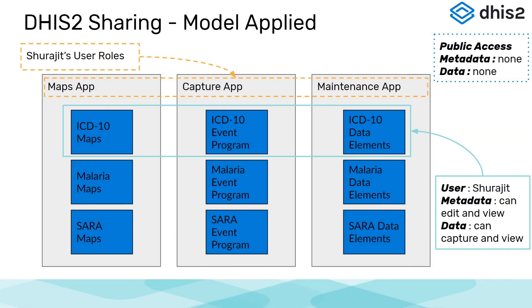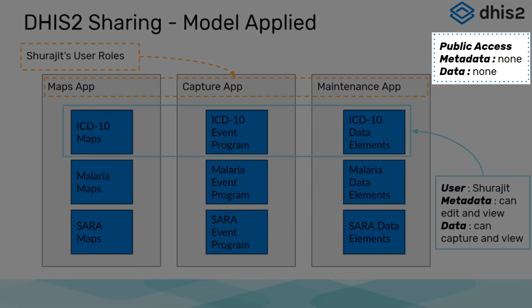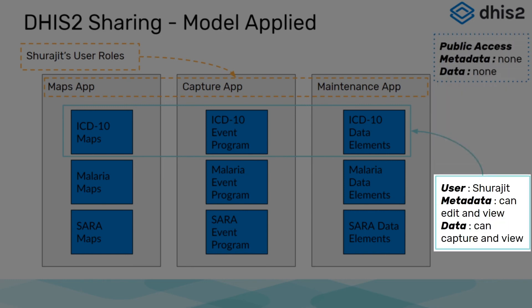Using the model we have presented, we can describe what we are going to do with the program that we have created. We will modify the sharing settings to the following: the first thing we will do is remove public access, meaning both metadata and data will be set to no access at the public level, so others logging in to the system will not be able to review and modify your program. We are then going to add our own user and apply metadata can edit and view, and data can capture and view. This will allow our user to perform any necessary function from editing the metadata to adding new events in Capture. Keeping these concepts in mind, we will go back to maintenance to configure this in DHIS2.